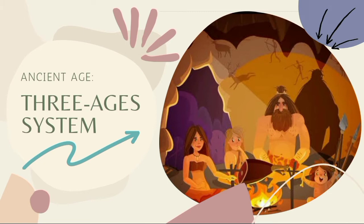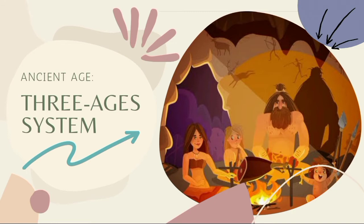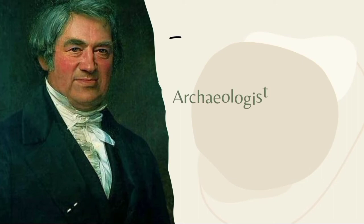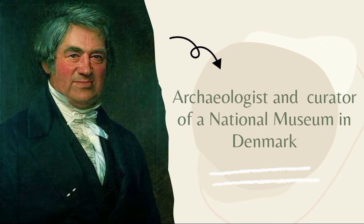Starting with the Ancient Age, during the 19th century, the World Prehistoric Period was categorized into what we called the Three Ages System. This system was introduced by Christian Jurgensen Thomsen through his published book entitled Guide to Scandinavian Antiquity. Christian Jurgensen Thomsen is an archaeologist and a curator of a national museum in Denmark, and this is where the first artifacts that he arranged came from.